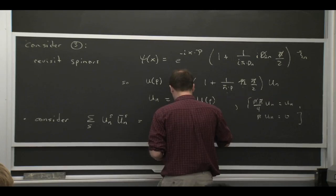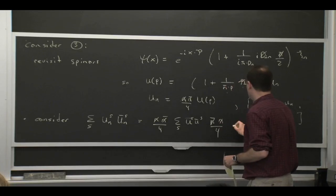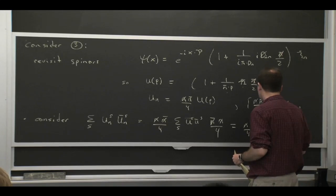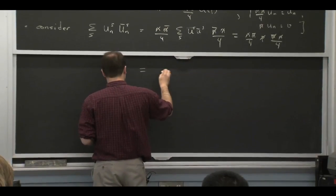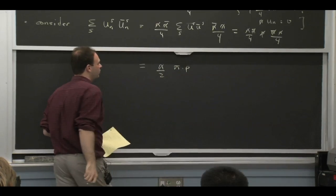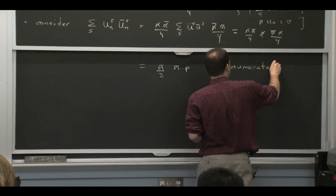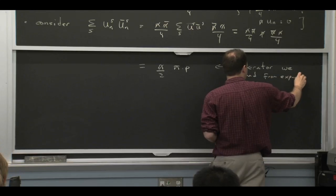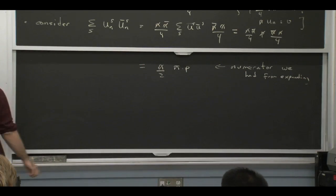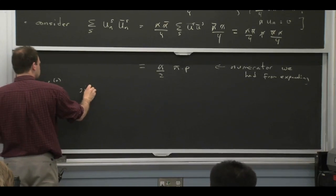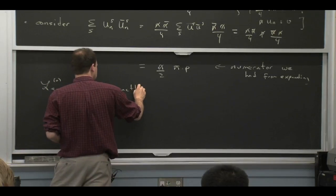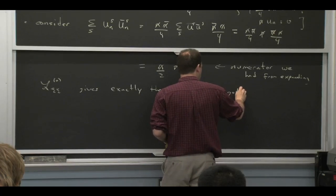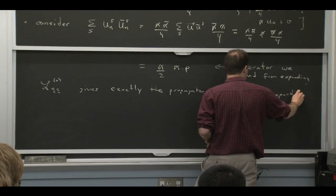And that spin sum is just p slash. So this is like p slash sandwiched between projectors. You can work out that that's exactly the numerator that we had before after a little bit of Dirac algebra. So that part works as expected. If we take this Lagrangian and work out what the propagator is, we get exactly the propagator we got from expansion. So quantizing LCC0 gives us that propagator.